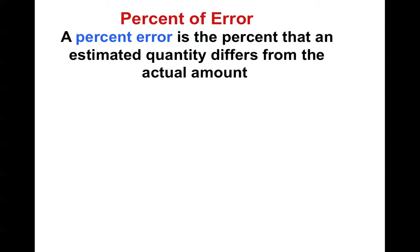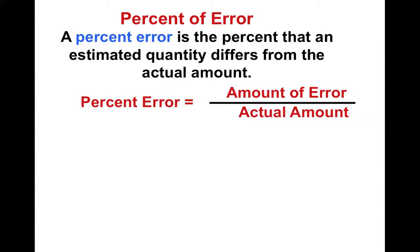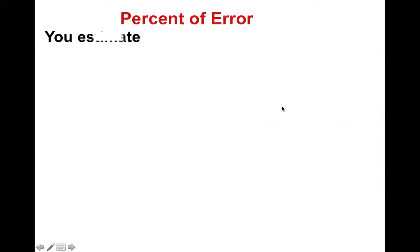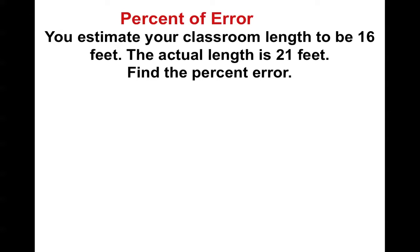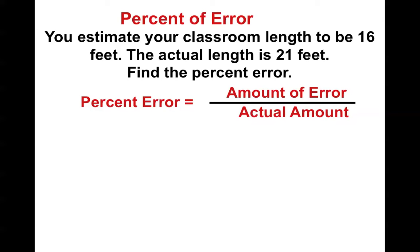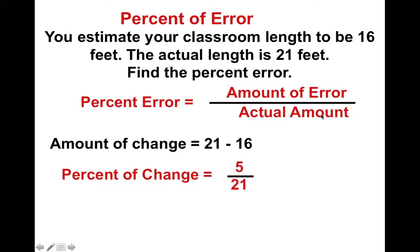Percent of error. To find the percent of an error, we estimate the quantity differs from the actual amount, which is pretty much the same formula that we've been using. Notice, it's the amount of error by the actual amount. So, if you estimate your classroom length to be 16 feet, and the actual length is 21 feet, what was your percent of error? Well, we want the amount of the error over the actual amount. So your error was 5 feet, and the actual amount was 21 feet. So we find the decimal, and we get the percentage.